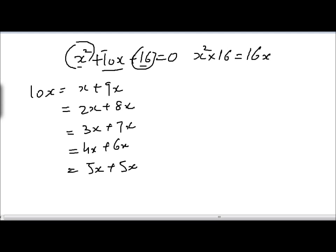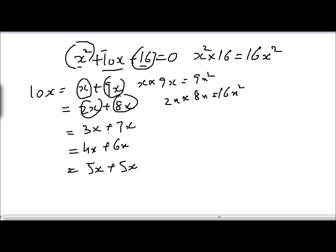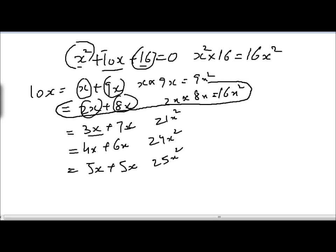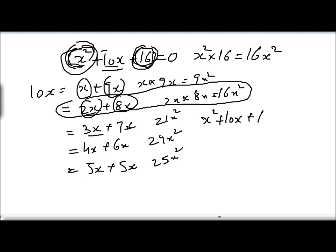Now let's calculate the product of these two terms. x squared times 16 is 16x squared. And 3x times 7x is 21x squared, and 4x times 6x is 24x squared, and 5x times 5x is 25x squared. We consider 2x and 8x because the product of 2x and 8x is 16x squared, which equals the product of x squared and 16. We just need to split the middle term into two terms such that the product of those two terms equals the product of the outer terms. So we split 10x into 8x and 2x.